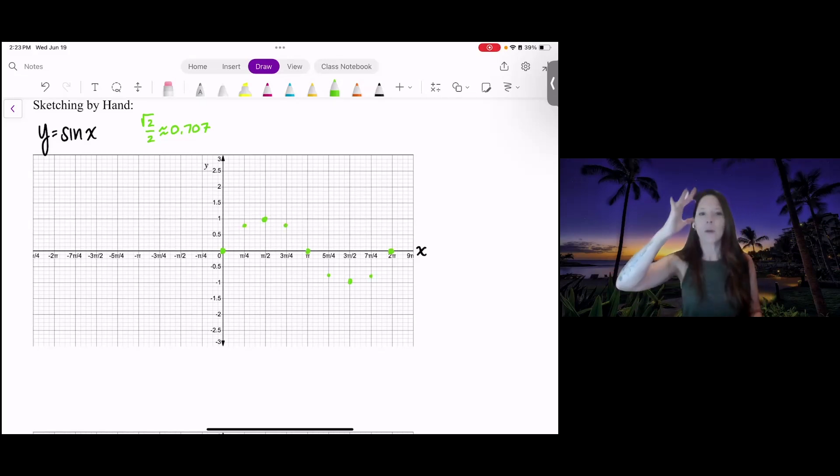In the first quadrant up to pi over 2, all the values are positive. In the second quadrant, all the y values are also positive. In the third quadrant, from pi to 3 pi over 2, they're negative. And from 3 pi over 2 to 2 pi, they're also negative.